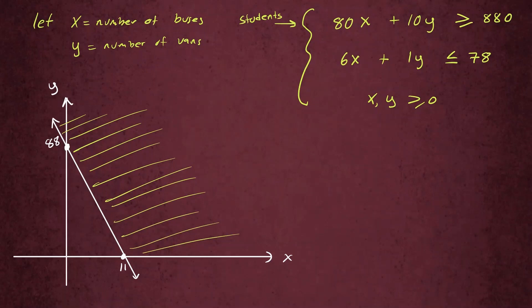And then for the second inequality, let's do the same thing. We find the intercepts. For the x-intercept, we're going to set y equal to 0, and that would give us 78 divided by 6, so that would give us 13. Let's suppose somewhere right here, this is 13. And for the y-intercept, we set x to 0, and we have y equal to 78. So let's draw a line, suppose that 78 right there.